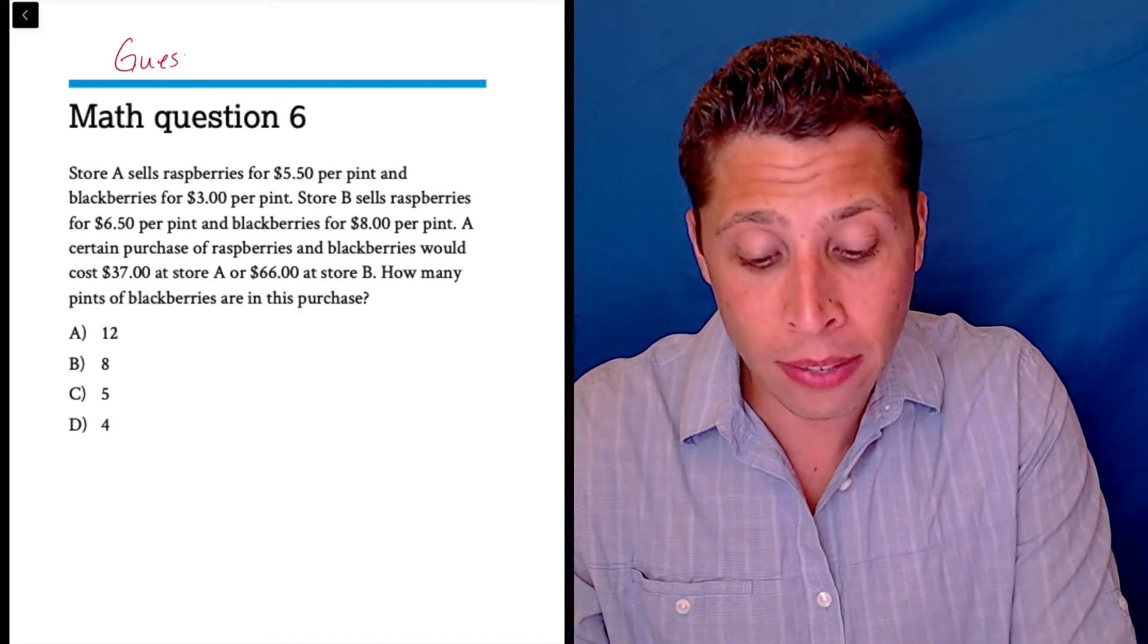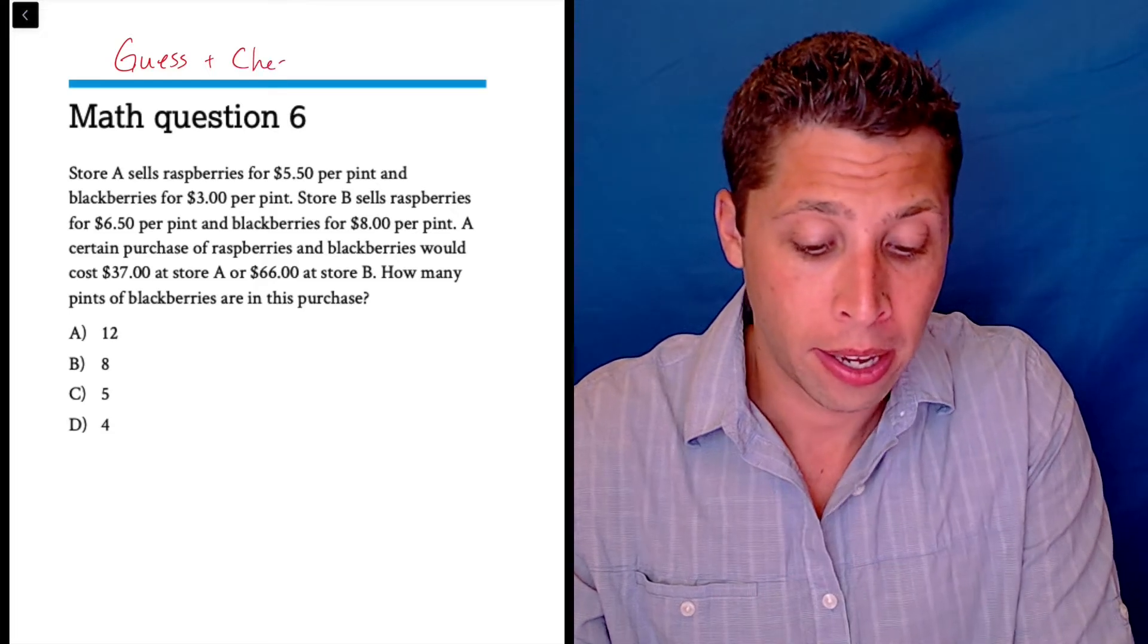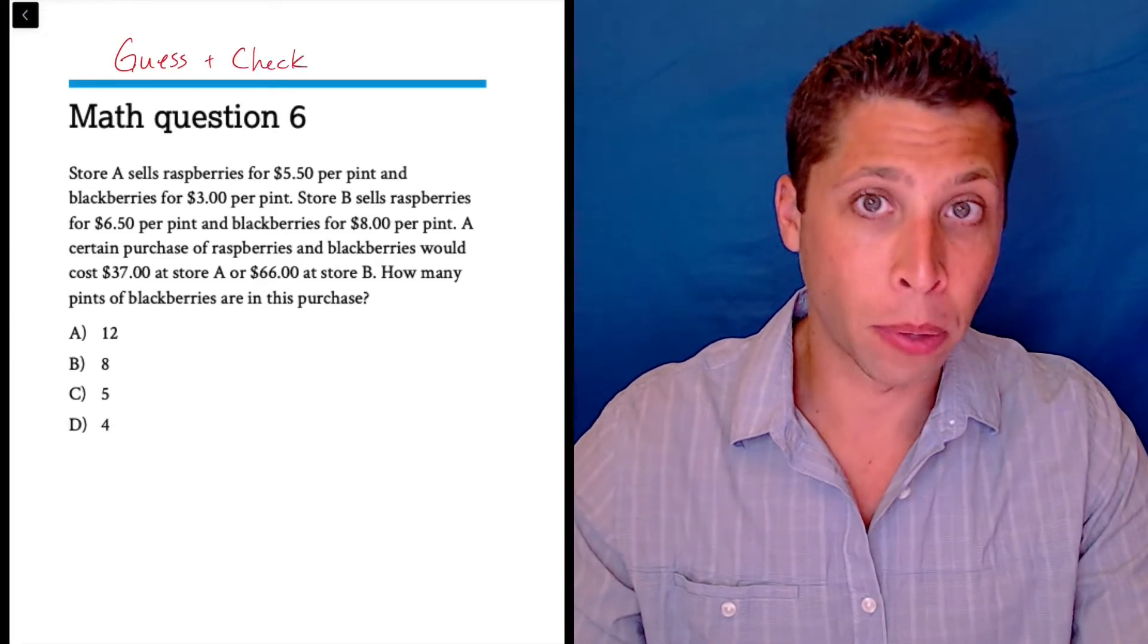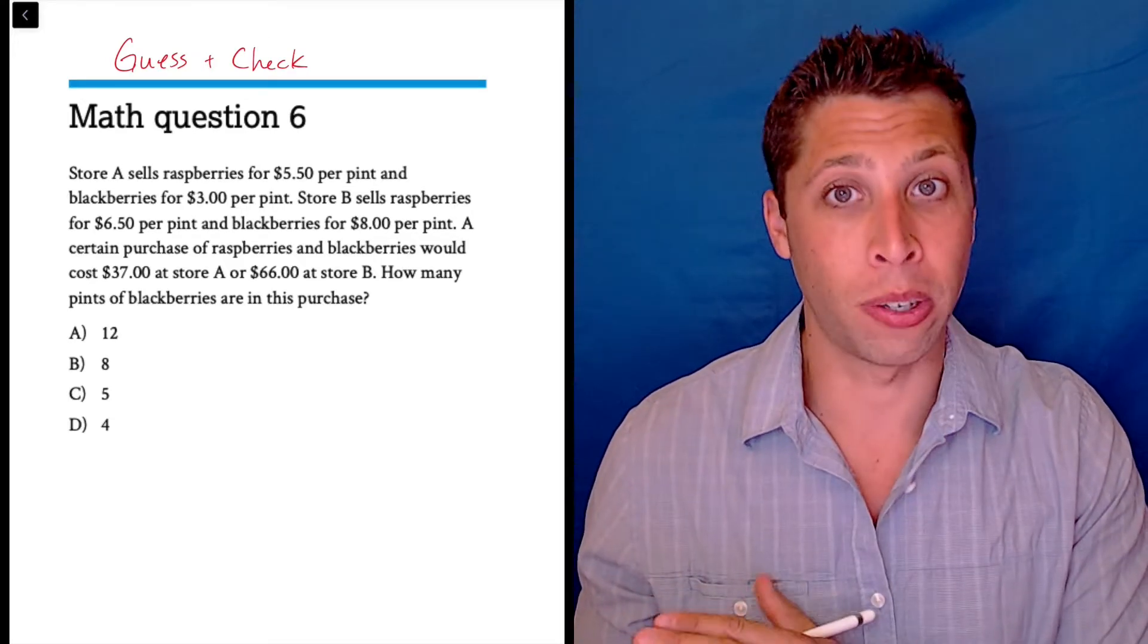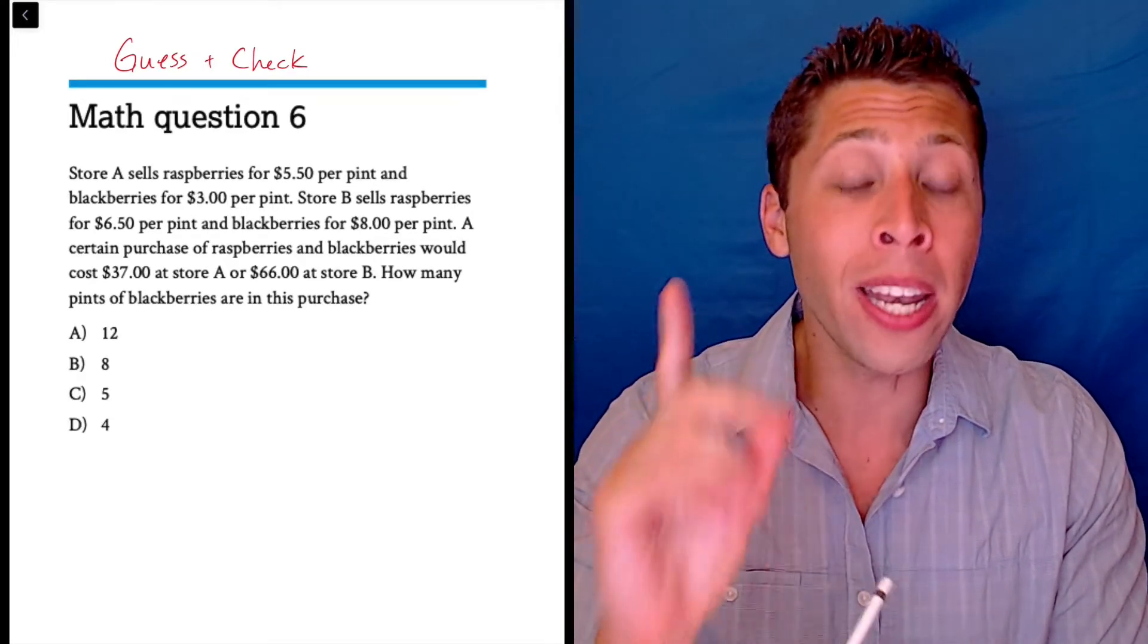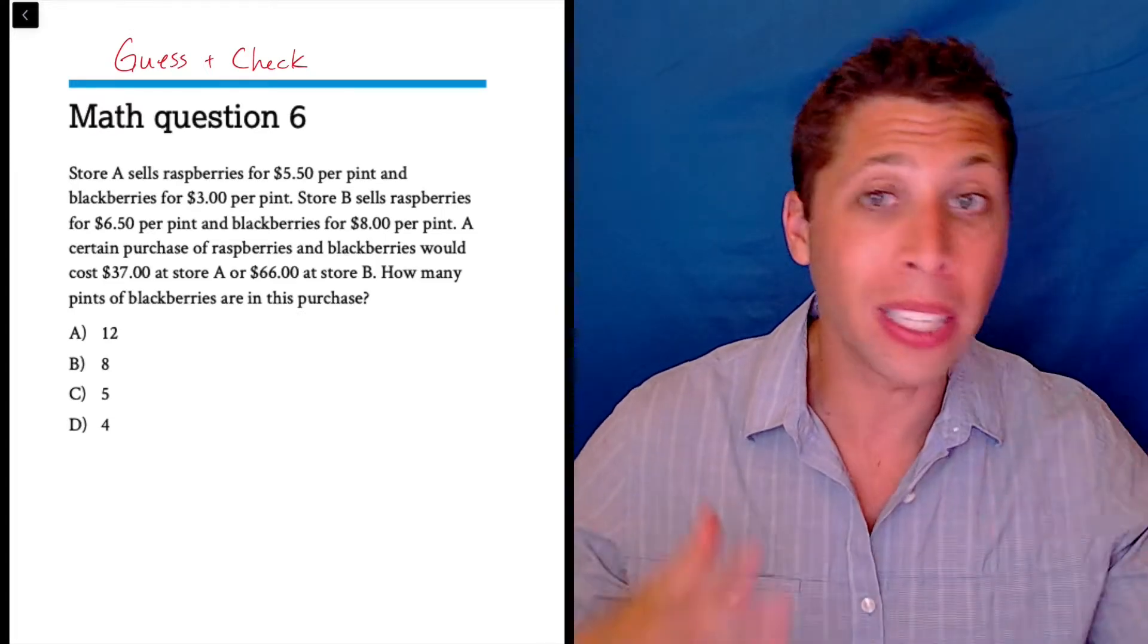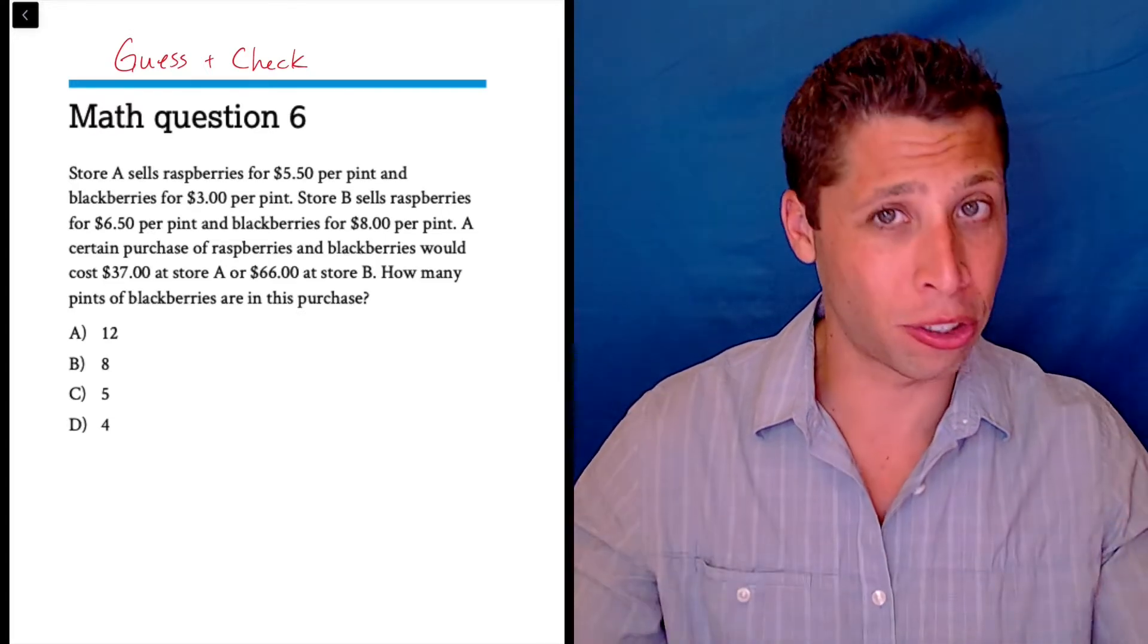And we can, because even though the question is confusing, the answers are pretty straightforward and we're going to be able to guess and check. So if there's a lot of numbers flying at you from a question, go to the answer choices. Odds are good that that one number can be our starting point and we can start to build the question around that one number.